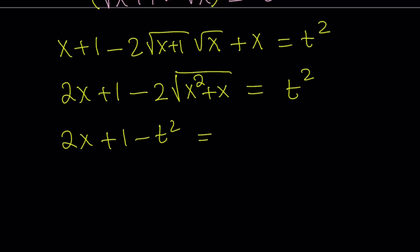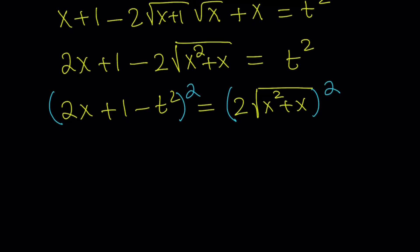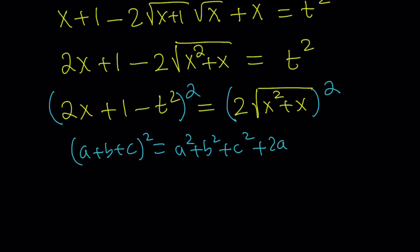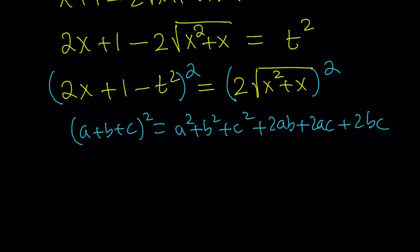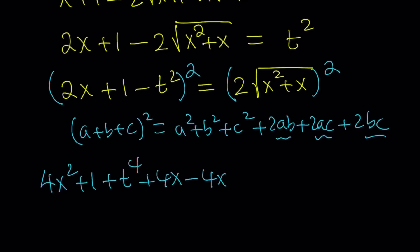Bringing the t squared over and the radical to the right-hand side, we can square both sides again. The left-hand side is a trinomial squared — (2x + 1 − t²)² — which expands using a² + b² + c² + 2ab + 2ac + 2bc. This gives 4x² + 1 + t⁴ + 4x − 4xt² − 2t². The right-hand side distributes to 4x² plus 4x.